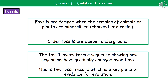Welcome to our review on evidence for evolution. The first thing we need to do is go back to our key stage three knowledge. When we're talking about a fossil, what we're referring to are the remains of animals or plants that have become mineralized - they've been changed into rocks. This is something that's happened over a really long period of time.